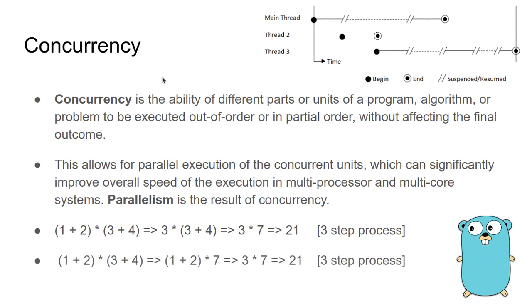Another way of calculating the same equation would be that I first calculate the result of 3 + 4 which is 7, and then I calculate the result of 1 + 2 which is 3, and then I multiply 3 by 7 which gives me 21.